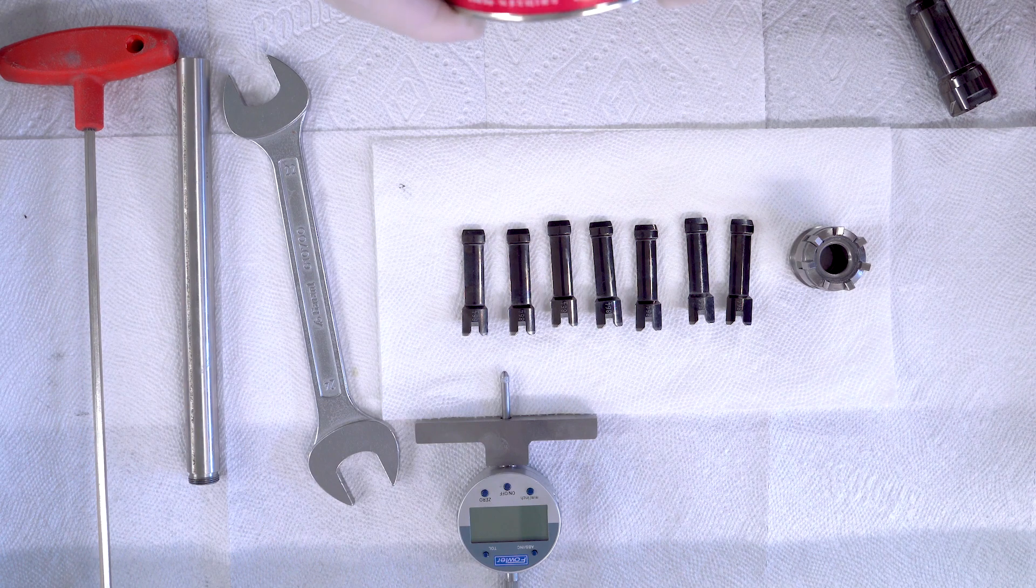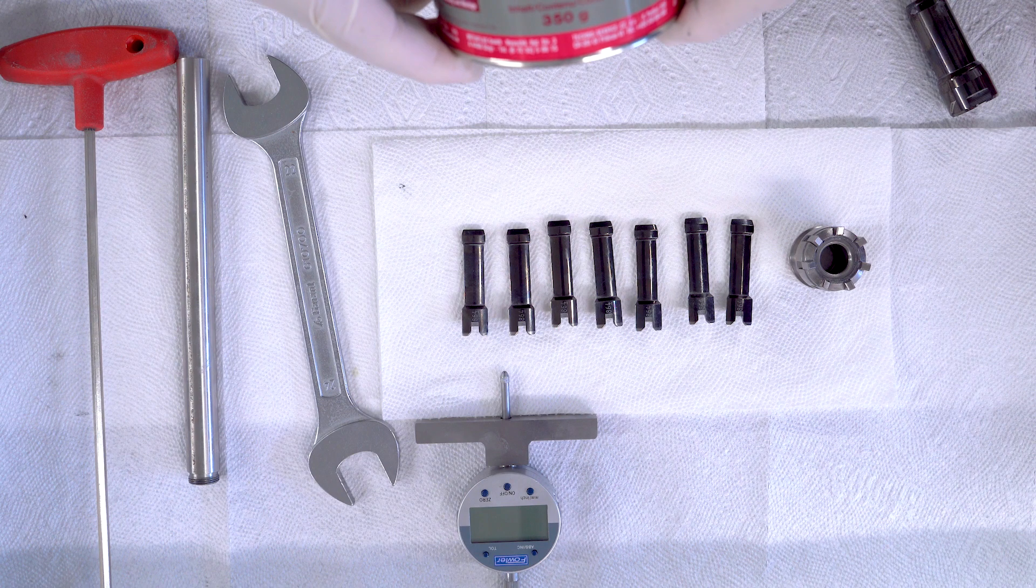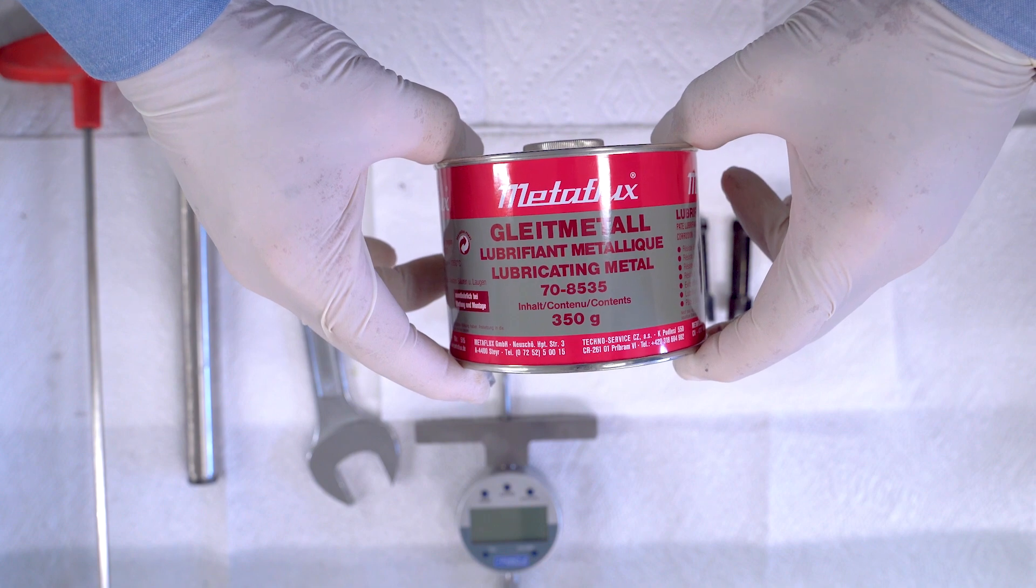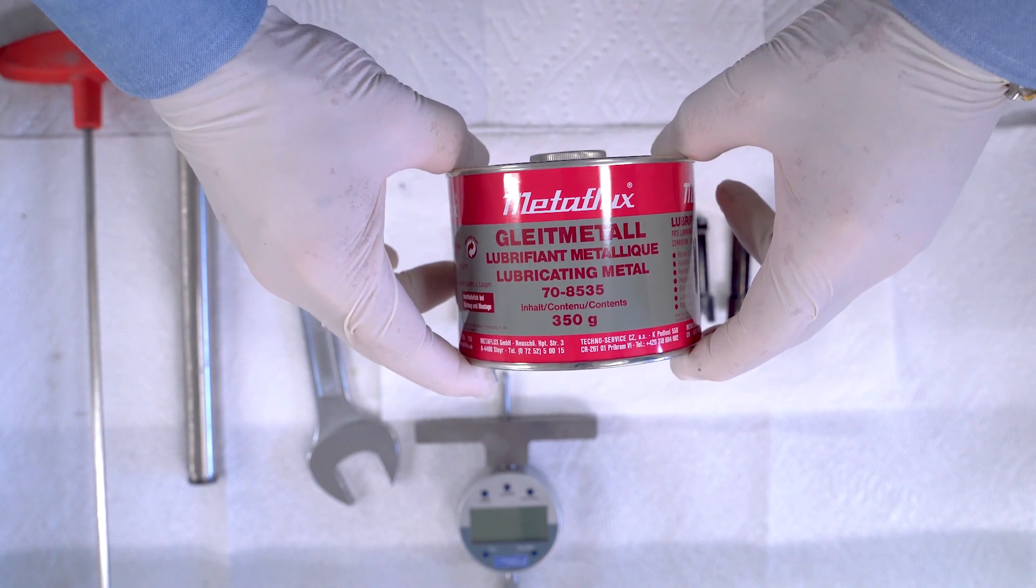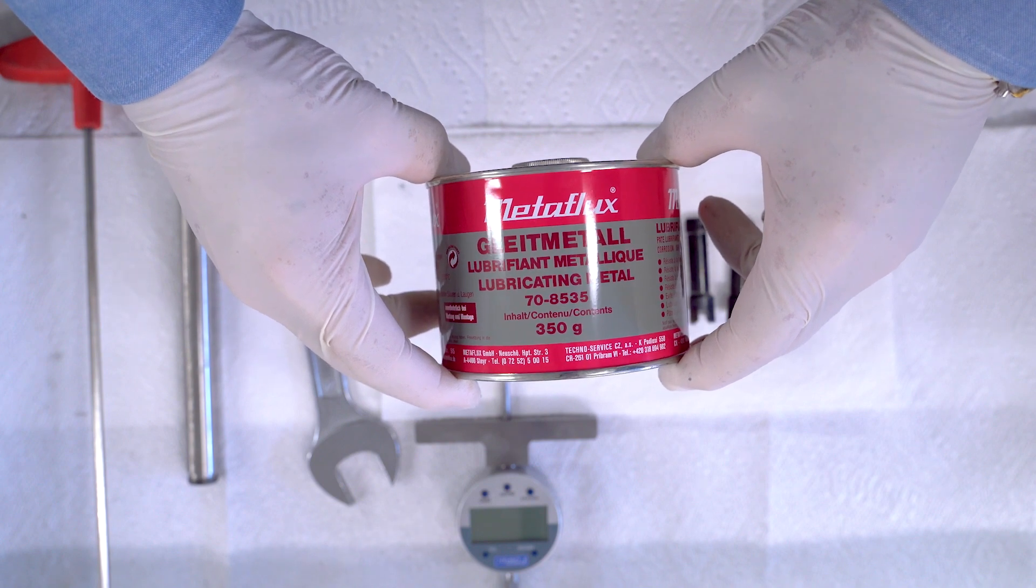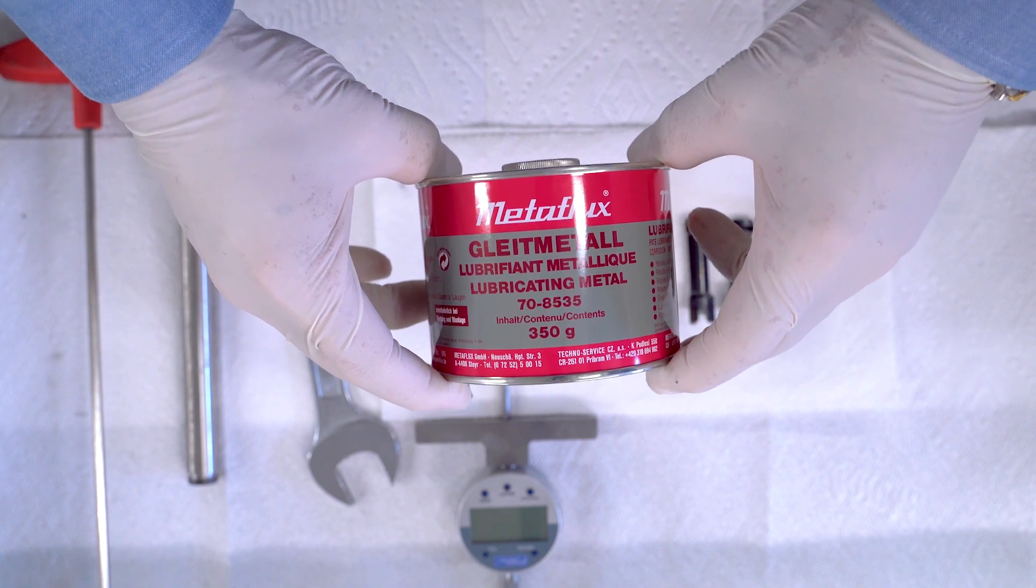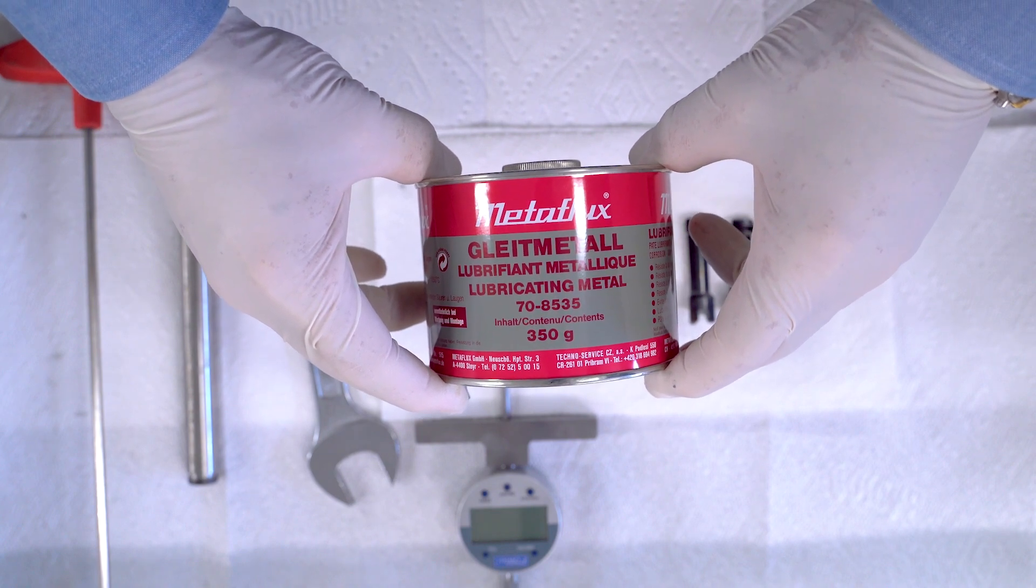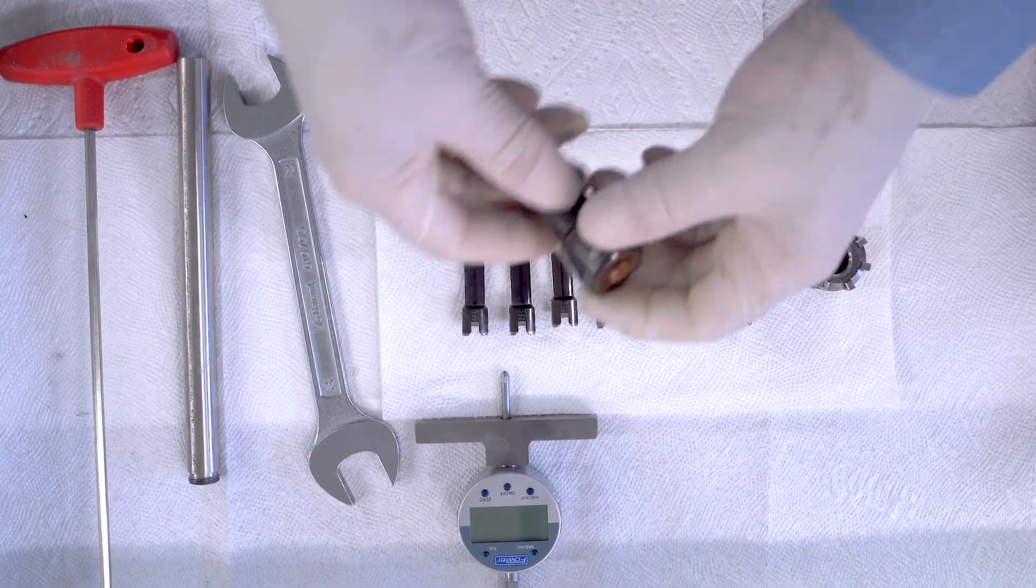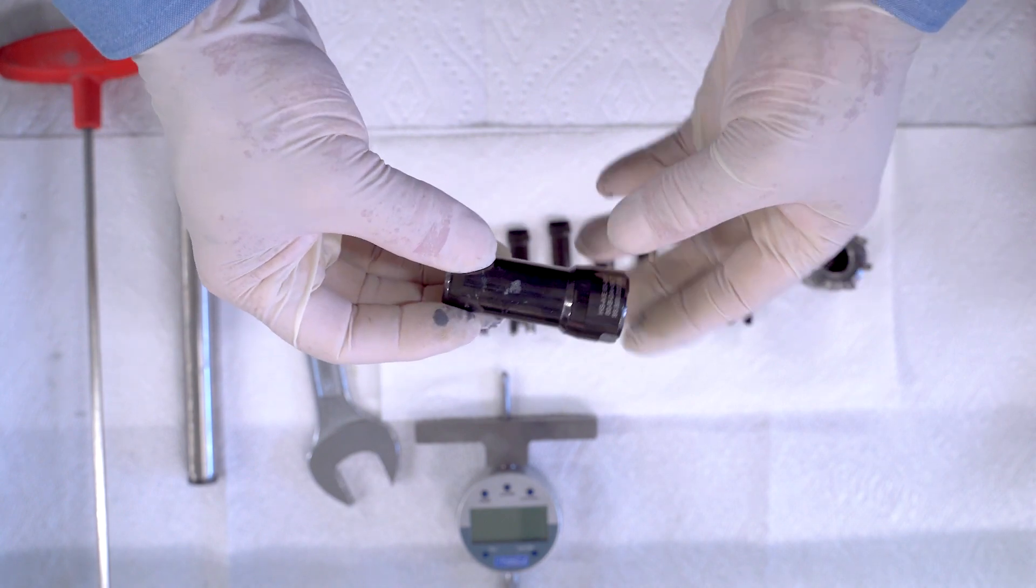We're going to start lubricating the fingers, the finger spacer, and the clamping body. What we're going to use is this Metalux paste here. We sell it and it's really important that you use this because it cuts down the friction between the fingers and the clamping body when it's unclamping and clamping, because the fingers amplify the pull force of the springs by roughly four times. First we're going to take the clamping body and start lubricating it.